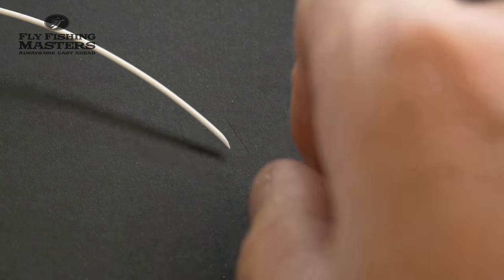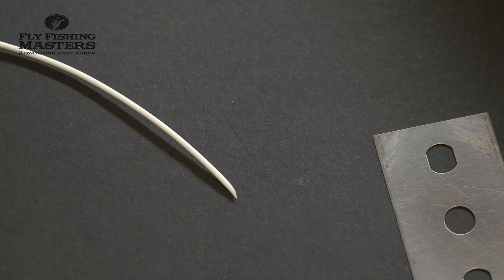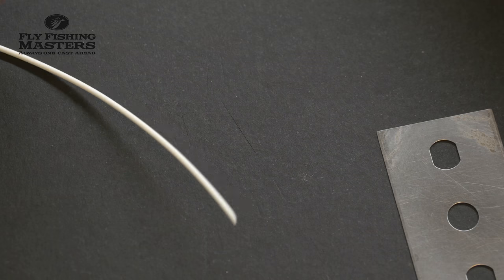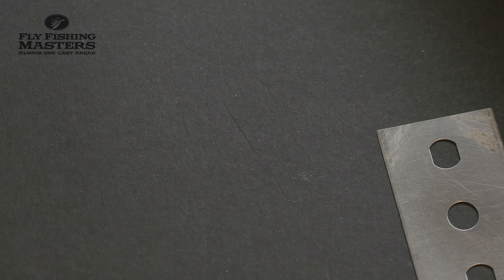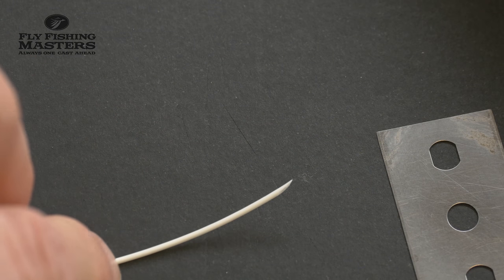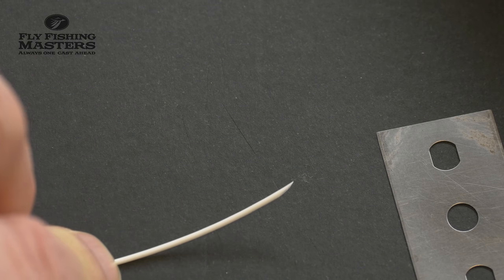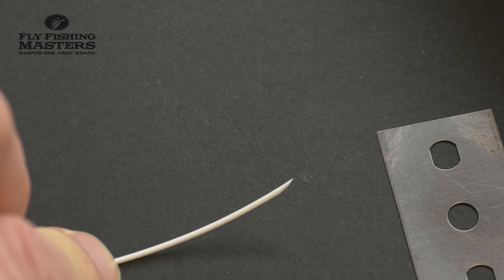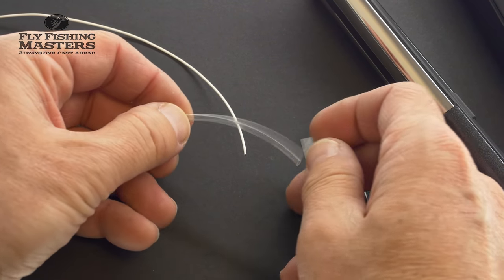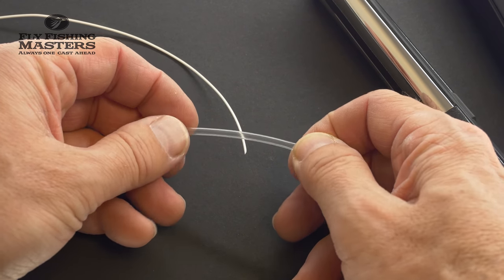We start with cutting the fly line at an angle like this. It's important to have this angle - it's like cutting an edge on the fly line as you can see, and we take our shrink tubing.